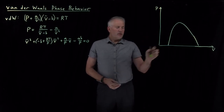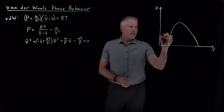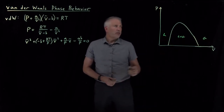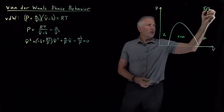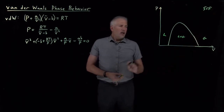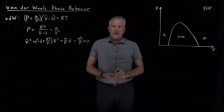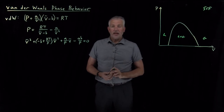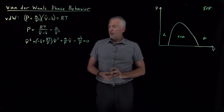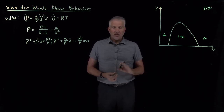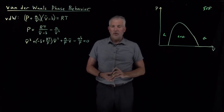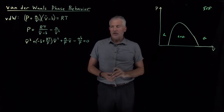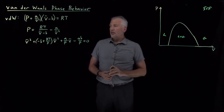Our pressure-volume phase diagrams tell us about the difference between liquids and gases, with a phase coexistence region in between and supercritical fluid at high temperatures. We can understand those phase diagrams quite a bit better if we use the Van der Waals equation of state rather than the ideal gas equation of state. The Van der Waals equation will help us understand not just the properties of gases, but also liquids in the phase coexistence region and supercritical substances as well.